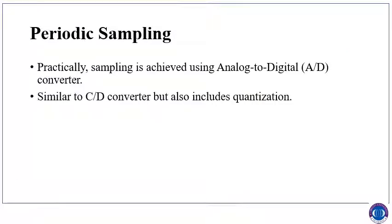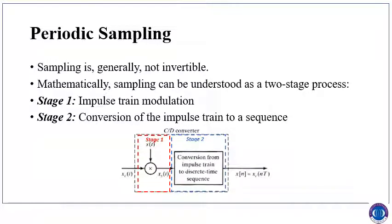In practice, sampling is achieved using analog-to-digital (A-to-D) converters. The C-to-D converter is essentially the same as A-to-D, except that A-to-D also includes quantization, which C-to-D does not — C-to-D only performs sampling. The first important thing to remember is that the sampling process is not invertible: you cannot go from x[n] back to xc(t) using the same method; something else must be done to recover the continuous time signal.